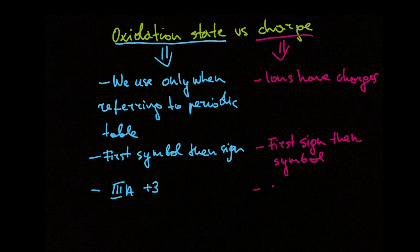For example, all elements in the third A group have oxidation state of +3, and the oxygen charge in sodium oxide is 2-.